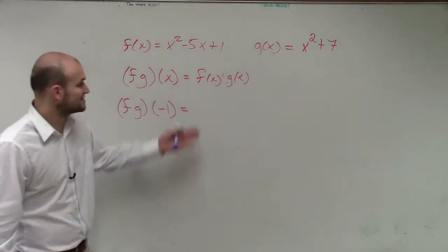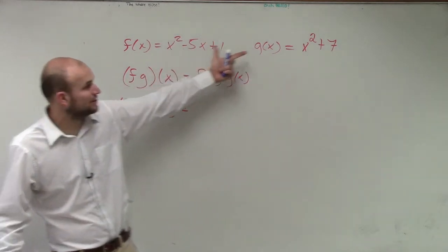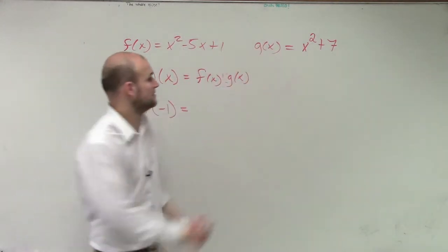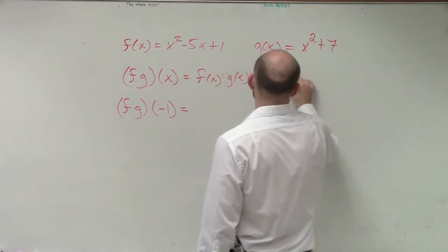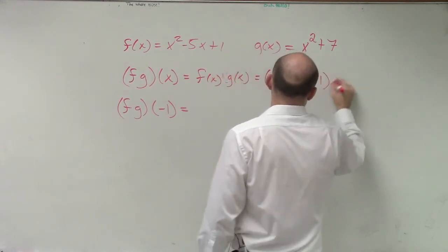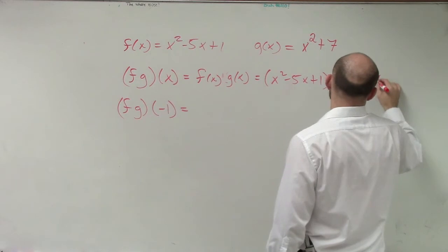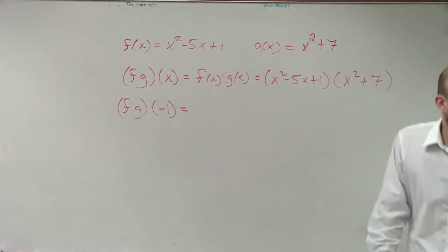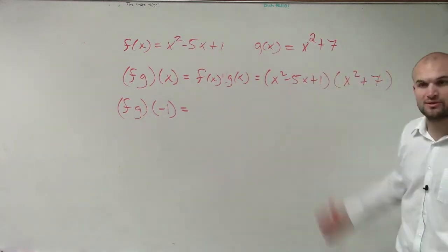So what you guys notice in here is this is a little difficult because now I have a polynomial times another polynomial, right? So what I really have is x squared minus 5x plus 1 times x squared plus 7. Now I wanted to do this problem because I wanted to show you guys how do you multiply a trinomial times a binomial?